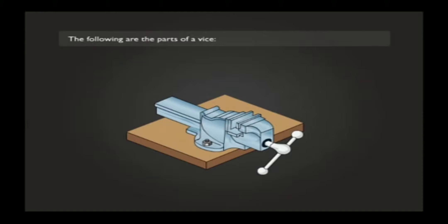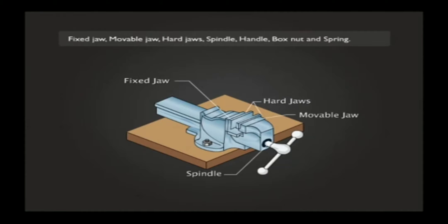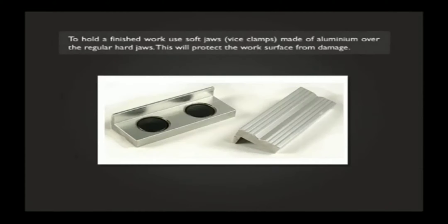The following are the parts of a vise: fixed jaw, movable jaw, hard jaws, spindle, handle, box nut and spring. The box nut and the spring are the internal parts.